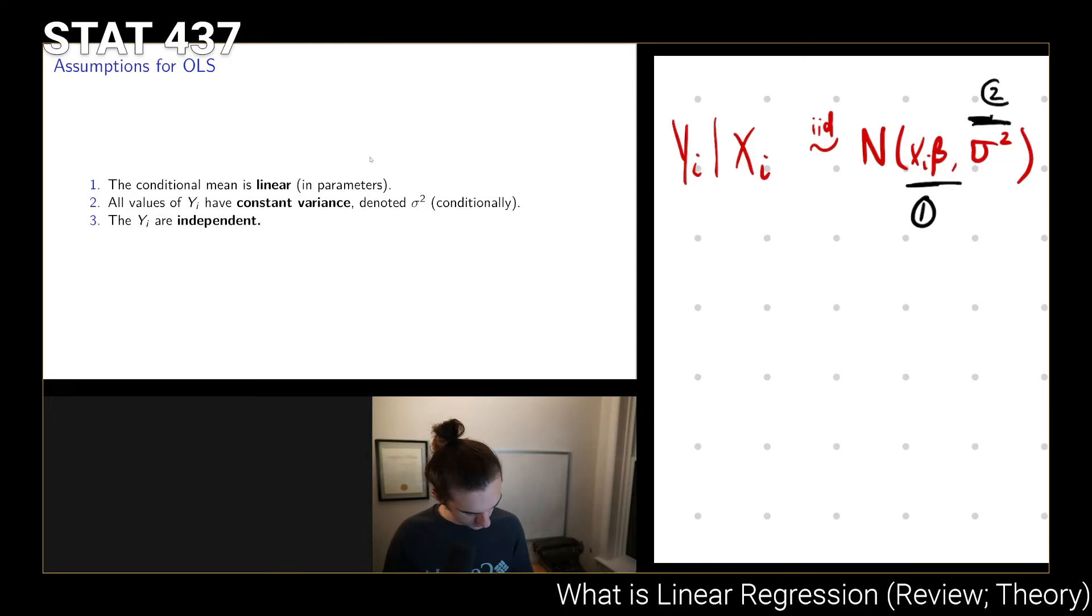For every i, so for i equals 1 to n, each individual in this sample is independent. So that's assumption number three. And those three assumptions are key. We don't need this normality assumption necessarily, but we do require those three assumptions in order to apply ordinary least squares theory the way that we typically apply ordinary least squares theory.